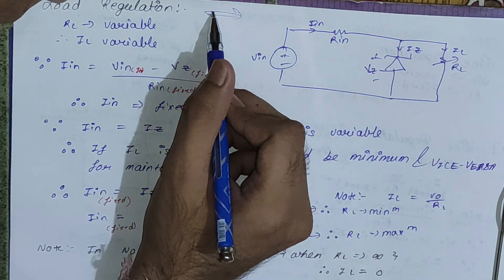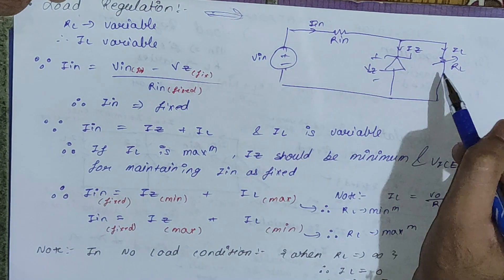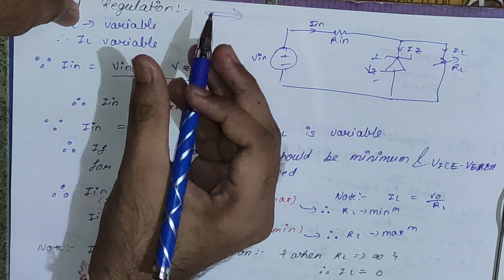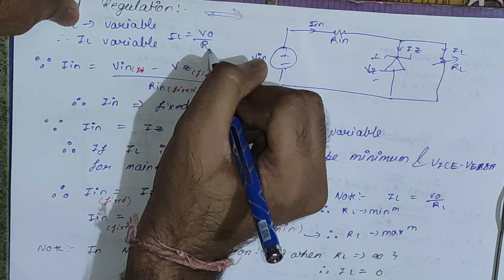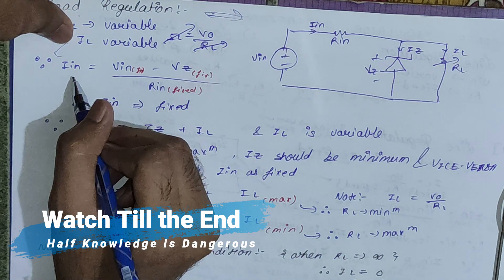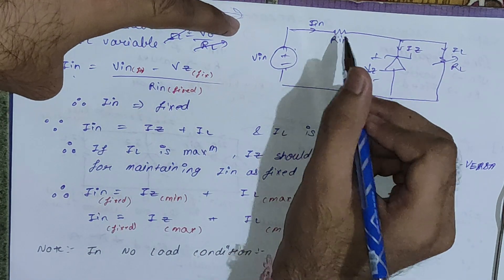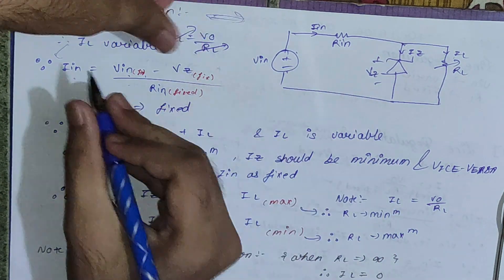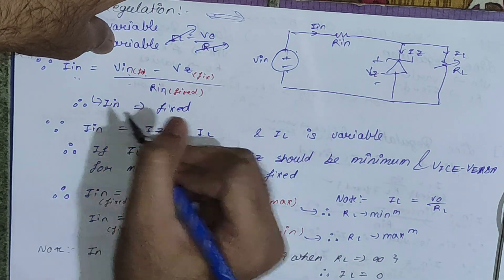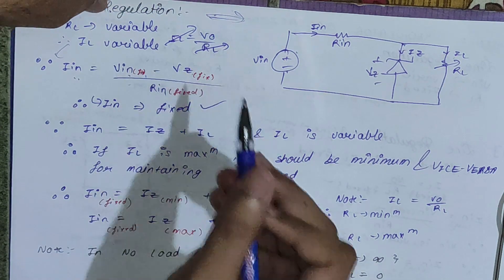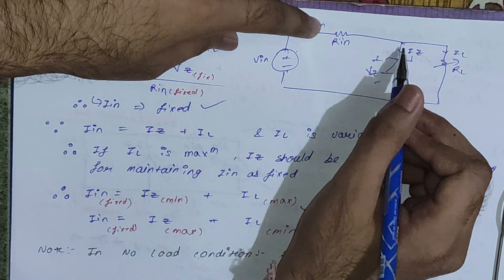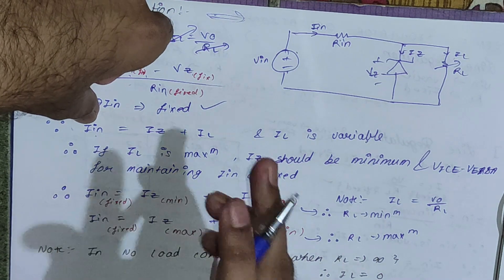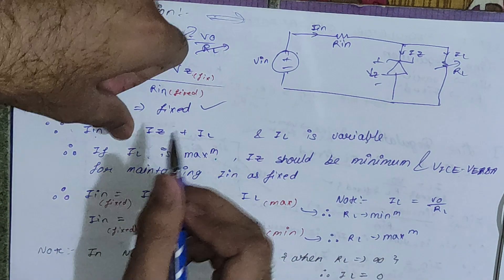For load regulation, RL is variable (shown by an arrow) while Vin is fixed. Since RL is variable, IL = Vo / RL is variable. However, Iin = (Vin − Vz) / Rin remains fixed because Vin, Vz, and Rin are all fixed. From KCL: Iin = Iz + IL. Since Iin is fixed and IL is variable, Iz must be variable to maintain this equation.